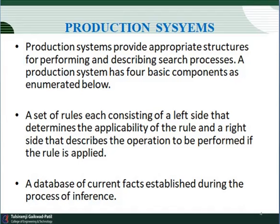A production system has four basic components. The first is a set of rules, each consisting of a left side that determines the applicability of the rule and a right side that describes the operation to be performed if the rule is applied. The left side determines applicability and the right side determines the operation to be performed when the rule is applied.